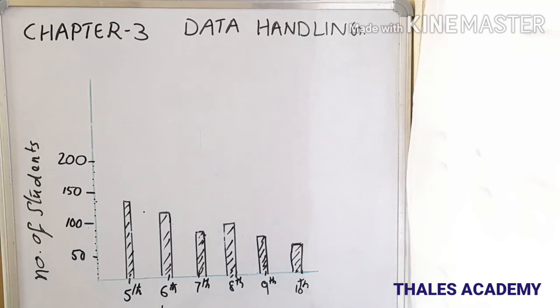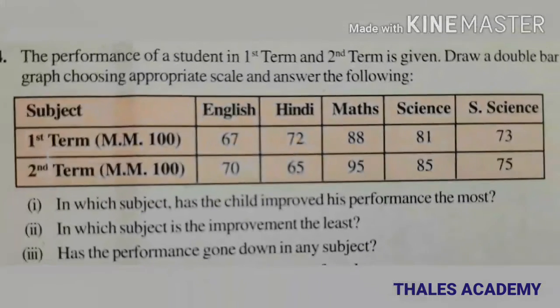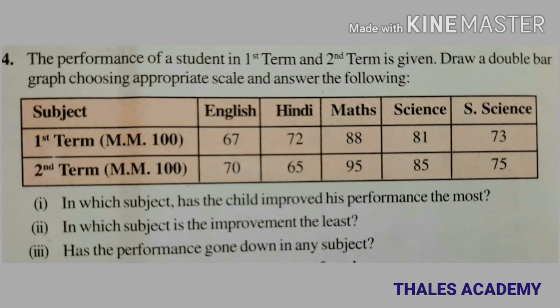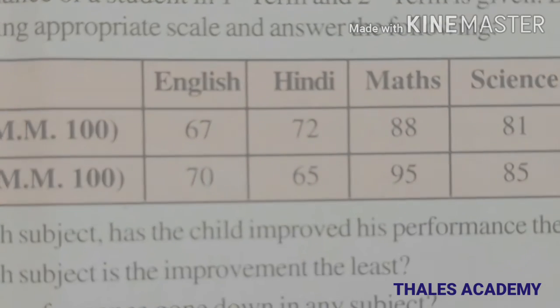In question four, the performance of a student in the first term and second term is given. Draw a double bar graph choosing an appropriate scale and answer the following questions: in which subject has the child improved his performance the most, in which subject is the improvement the least, and has the performance gone down in any subject?